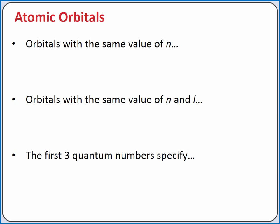Orbitals with the same value of N are said to be in the same shell or principal level. Orbitals with the same value of N and L are said to be in the same subshell or sublevel. And the first three quantum numbers specify a single orbital within the atom.